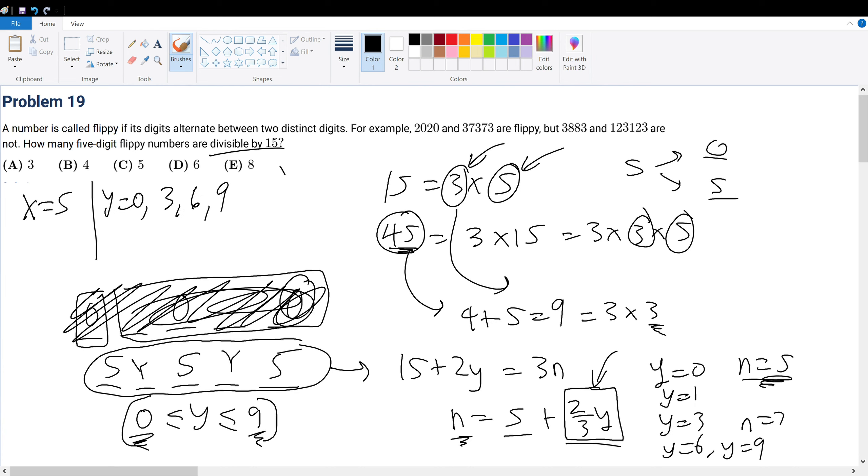Now that we've found the values of y, what are the total possible pairings of x and y? It could be 5 and 0, 5 and 3, 5 and 6, and 5 and 9. We have a total of 4 possible pairings. Therefore, we have a total of 4 possible five-digit floppy numbers.